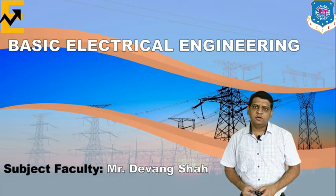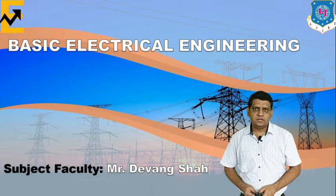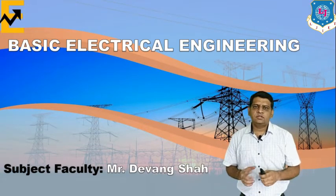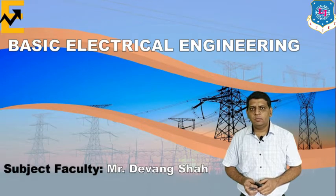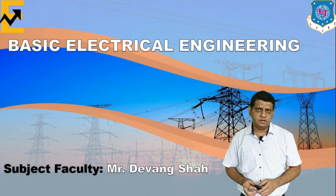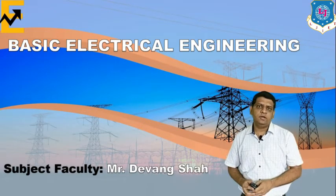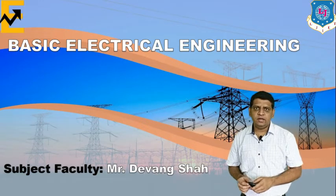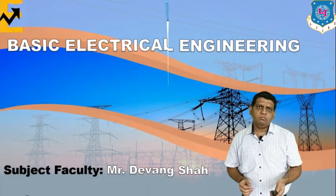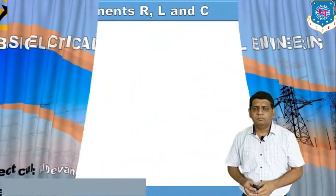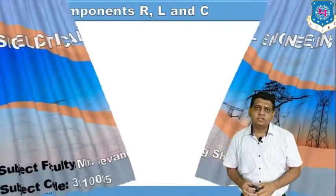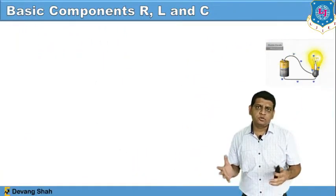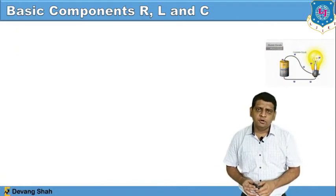This is Devaksha from LG Institute of Engineering and Technology. Today let us start and discuss about the basic components of electrical circuitry. There are three basic components of electrical circuitry: resistance, inductor, and capacitor. Just as to survive in this world we require Ruti Kapra Makar, same way to design electrical circuitry we require resistance, inductor, and capacitor.